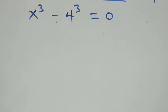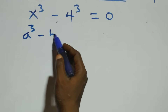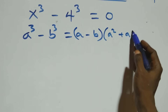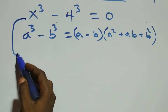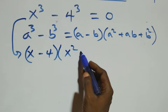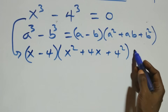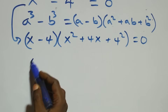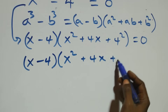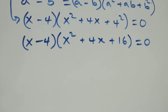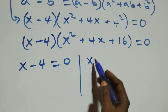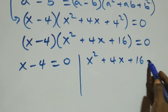Now solving the second case, x cubed minus 4 cubed equals to 0. This follows the difference of cubes formula: a cubed minus b cubed equals a minus b times a squared plus ab plus b squared. So what we have becomes x minus 4 times x squared plus 4x plus 4 squared equals to 0. We again have two possible cases: x minus 4 equals to 0, or x squared plus 4x plus 16 equals to 0.